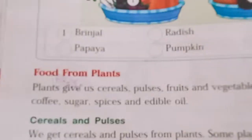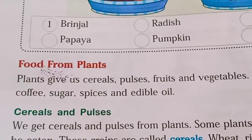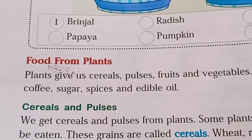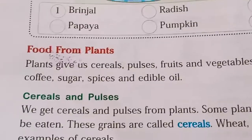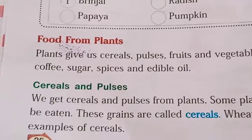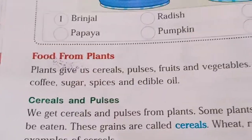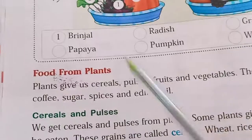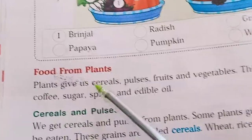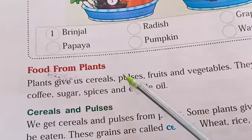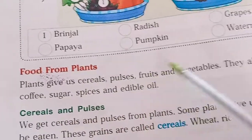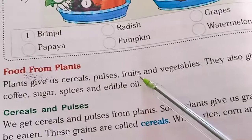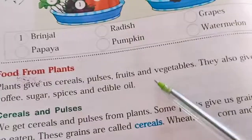So here — food from plants. How do we get food from plants? Plants give us cereals, pulses, fruits, and vegetables.